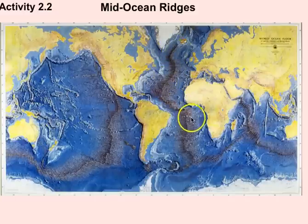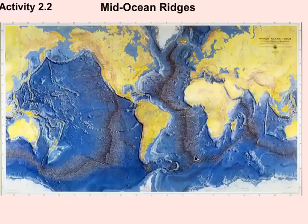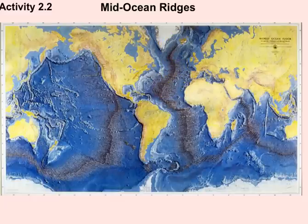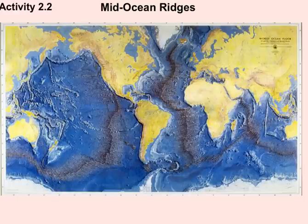One of the key figures in discovering mid-ocean ridges was Harry Hess, a geologist at Princeton University. During World War II, he was on a Navy ship equipped with depth finders to locate submarines. When not tracking German subs, he used those depth finders to map the height of the ocean floor — effectively conducting scientific research while serving in the war, double-dipping to gather valuable geological data.